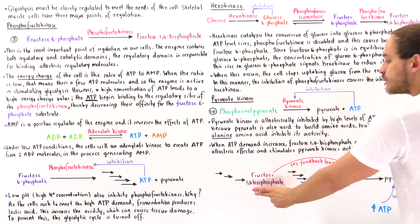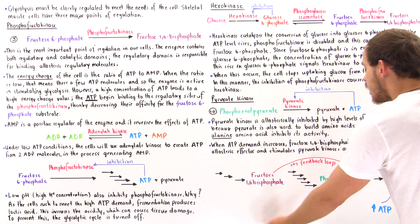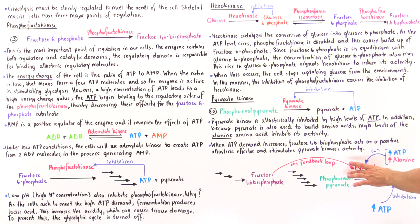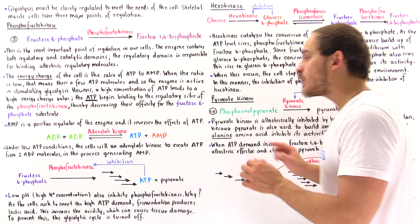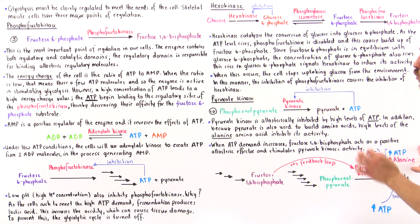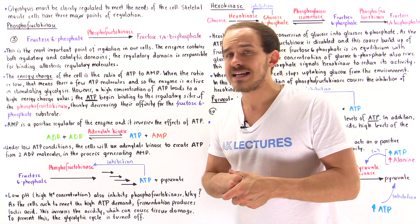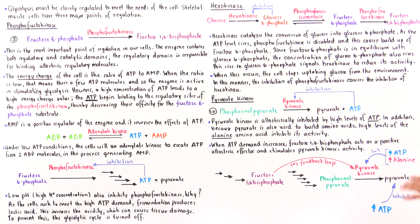This fructose 1,6-bisphosphate will go on and bind onto pyruvate kinase and activate that molecule. And that will increase the rate at which we actually produce those ATP molecules that are needed by our cells.